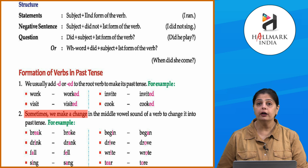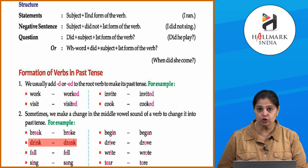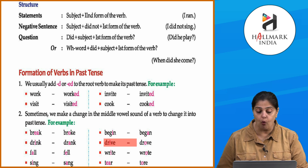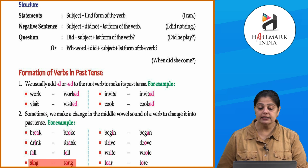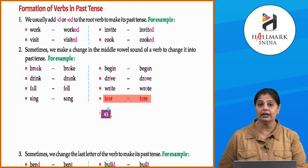Sometimes we make a change in the middle vowel sound of a verb to change it into past tense. For example: break → broke, begin → began, drink → drank — here 'ea' vowels are replaced with 'o', and 'i' is replaced with 'a.' Also: drive → drove, fall → fell, sing → sang, tear → tore. So the middle vowel sound changes.